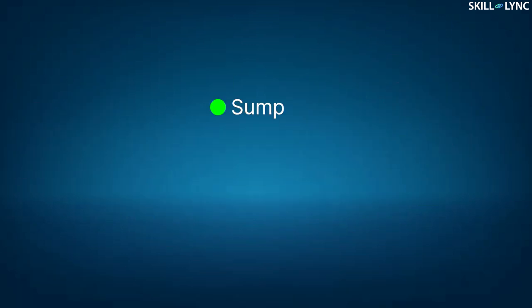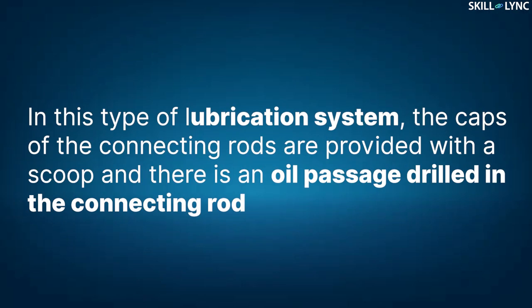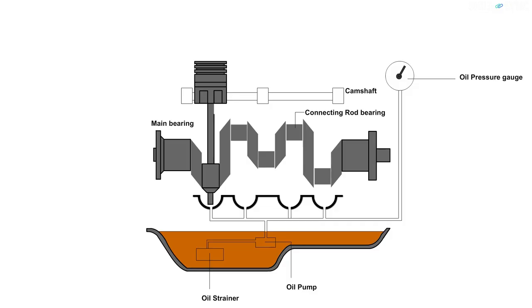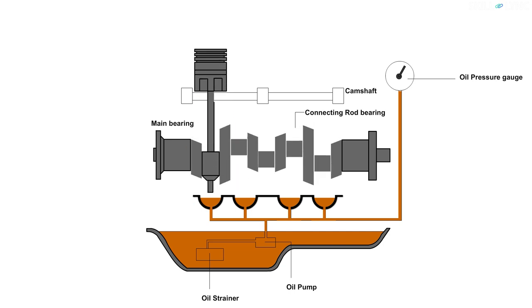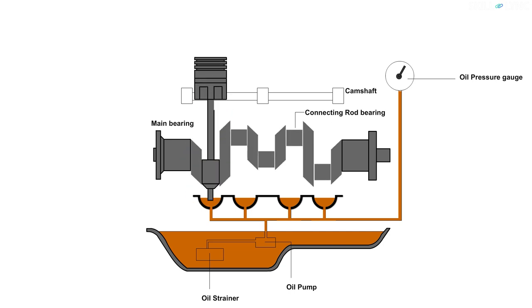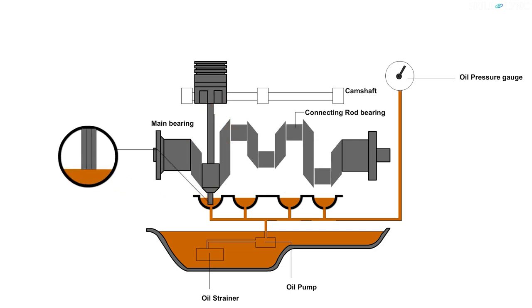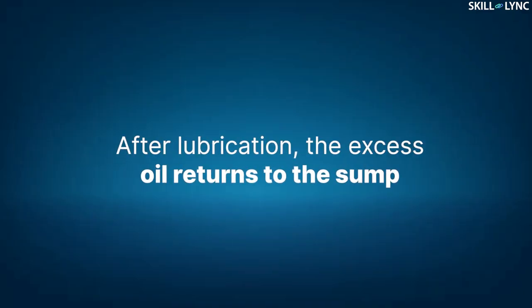Let's start with the splash type. This lubrication system consists of a sump, strainer, oil pump, and an oil trough. The caps of the connecting rods are provided with a scoop, and there is an oil passage drilled in the connecting rod. The oil from the sump is filtered by the strainer and pumped to the trough. When the crankshaft rotates, the scoop dips into the oil trough, making the oil splash. Splashing oil lubricates the piston and the cylinder walls, while oil enters through the drilled passage for lubricating the bearings.